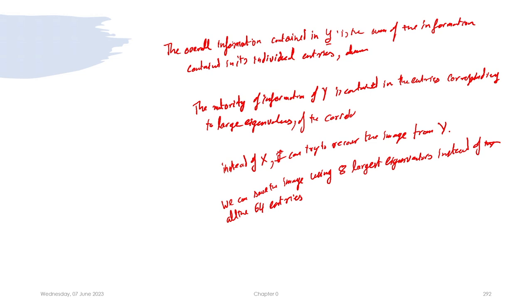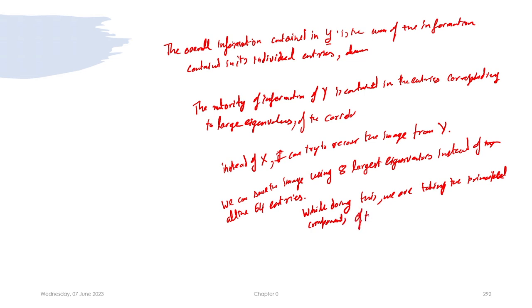We can save the image using 8 largest eigenvectors instead of all 64 entries. While doing this, we are taking the principal components of the image. This idea of using just the strongest eigenmodes or strongest eigenvectors to store the image is known as principal component analysis (PCA).